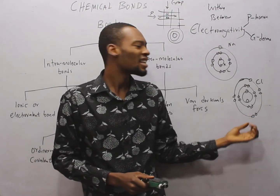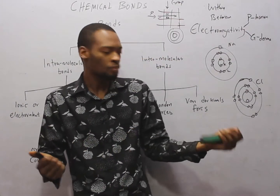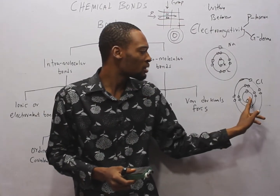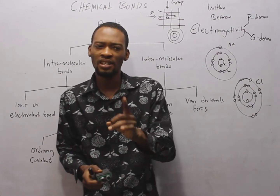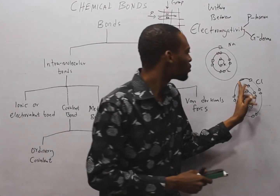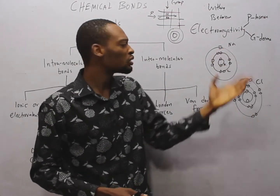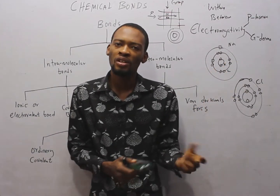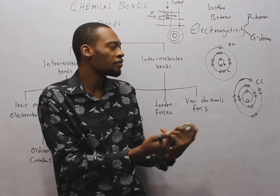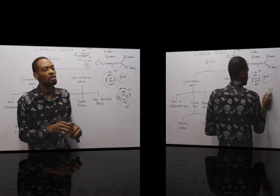Chlorine has seven electrons in its outermost shell and needs one more to be stable. The reason for chemical reactions is to achieve stability — either a duplet (maximum of two electrons) for the K shell, or an octet (maximum of eight electrons) in the outermost shell. Chlorine needs one electron; sodium can easily give out its one outer electron. Due to this large electronegativity difference, they combine to give sodium chloride — an ionic or electrovalent bond.